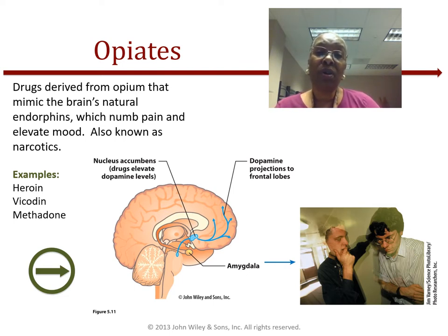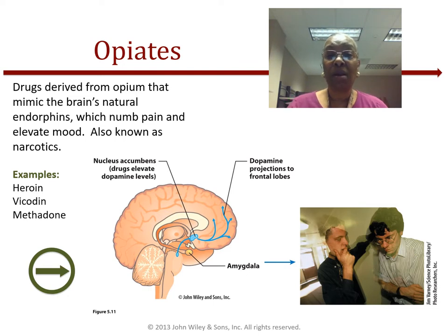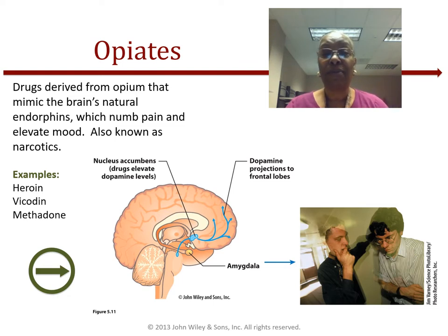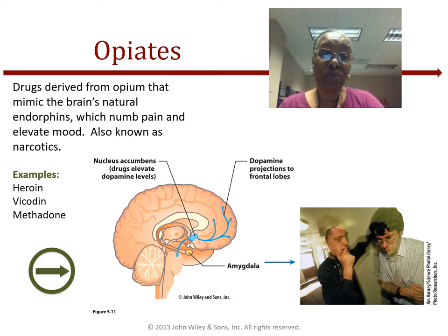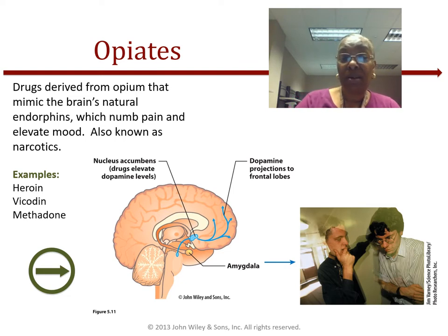If a user later attempts to stop, the brain lacks both the artificial and normal levels of pain-killing chemicals, making withdrawal excruciating. Drugs derived from opium mimic the brain's natural endorphins, which numb pain and elevate mood — these are narcotics such as heroin, Vicodin, methadone, Percocet, and oxycodone.